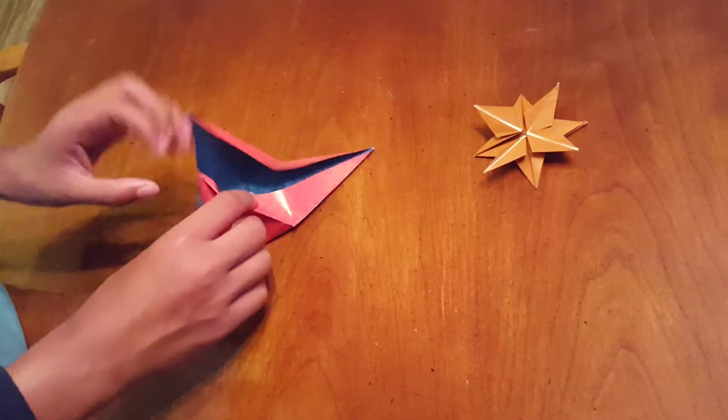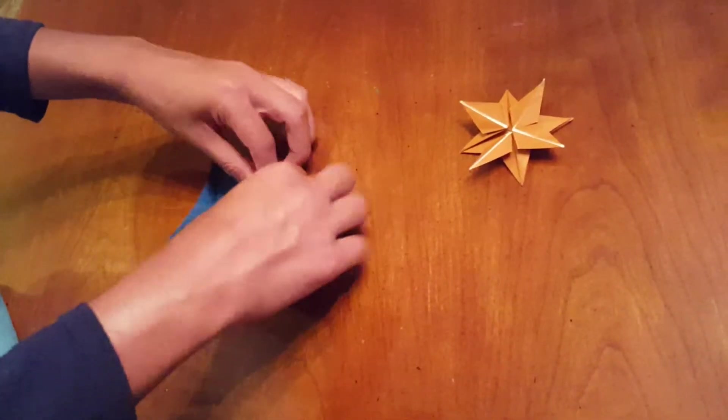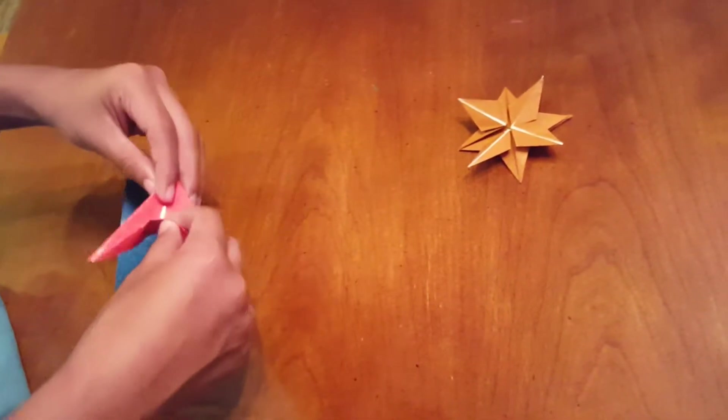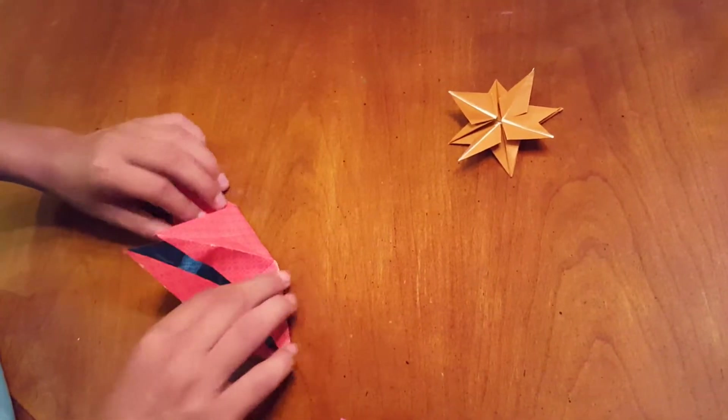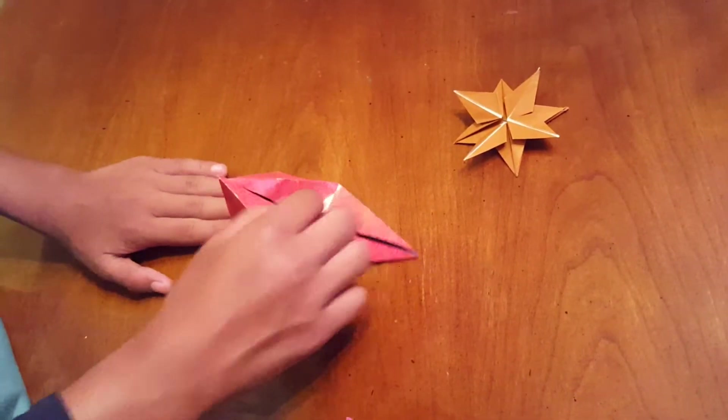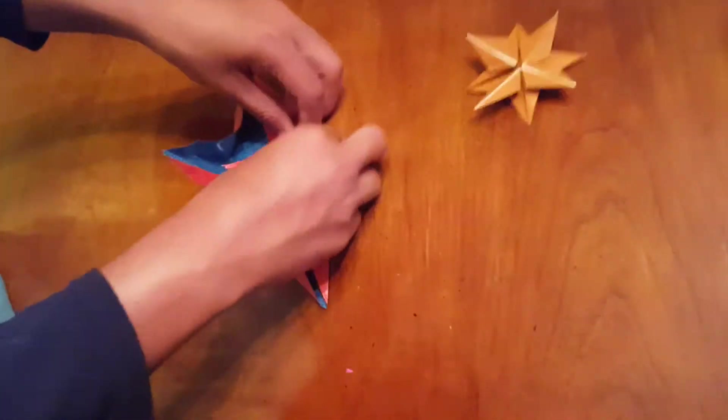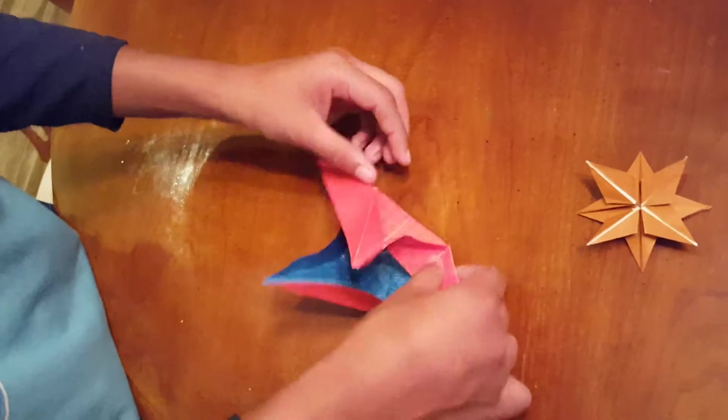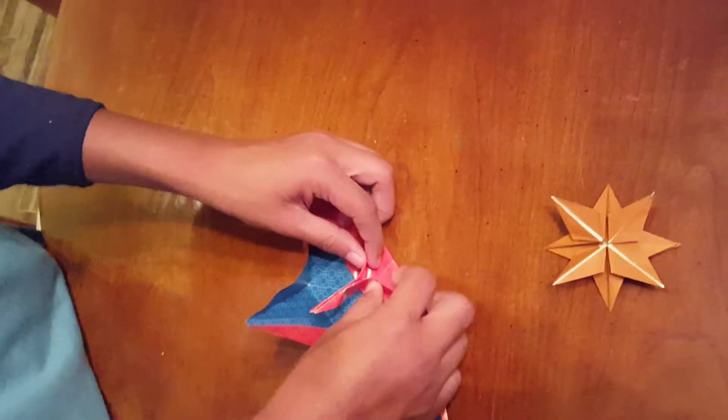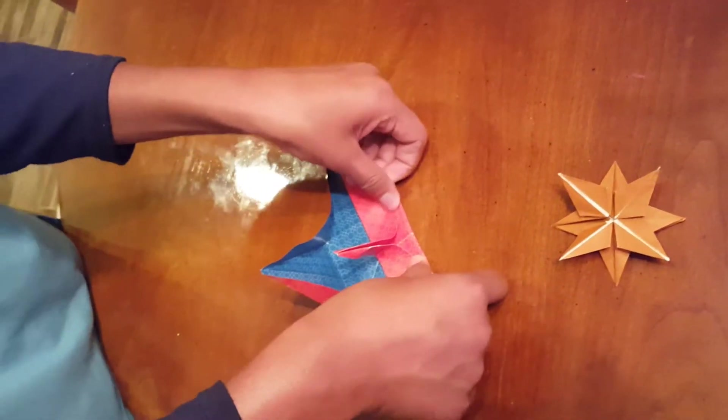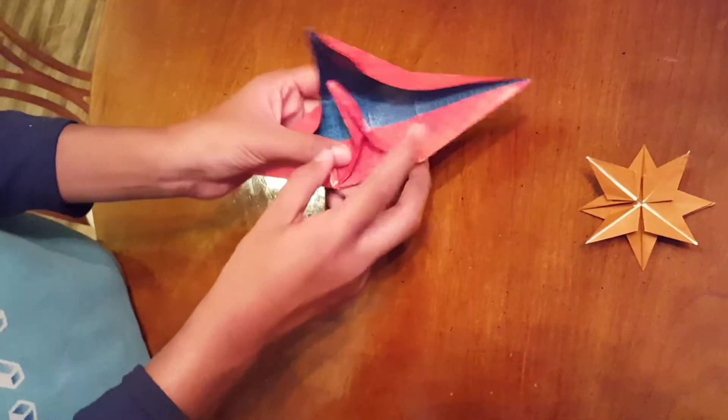Now we basically just want to do a squash fold here, but make sure you don't do it like here, because we want this to stay on the middle and covering the blue. So basically like this. What we did is put this down here and then squashed it like that. Now we have this here.